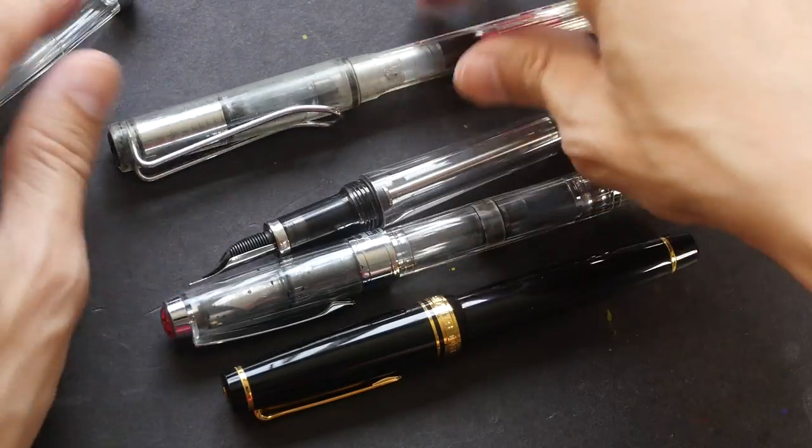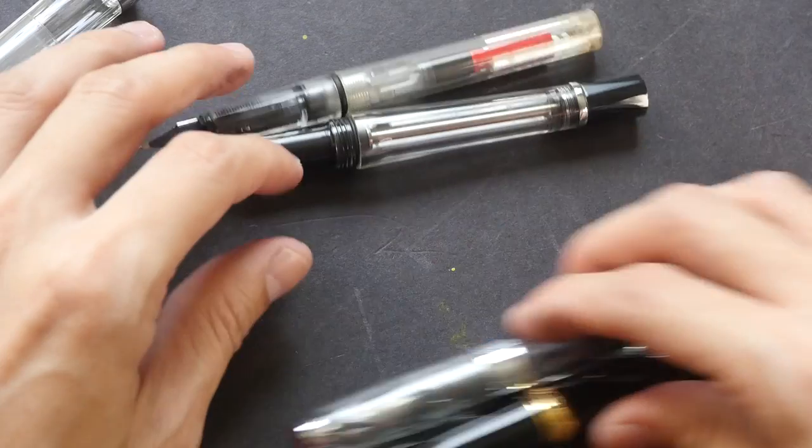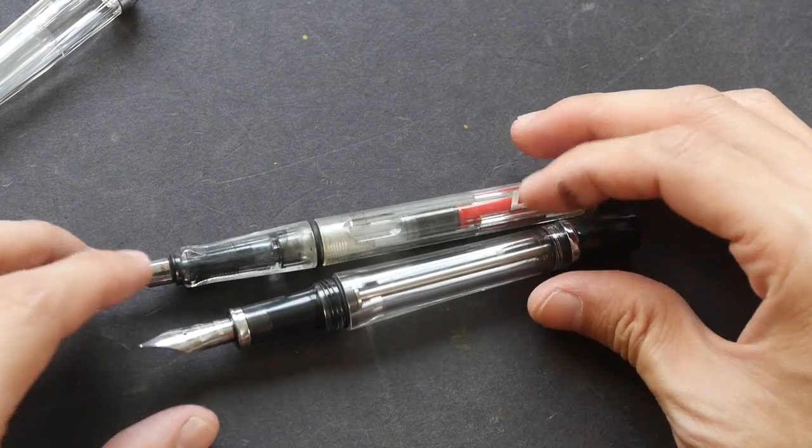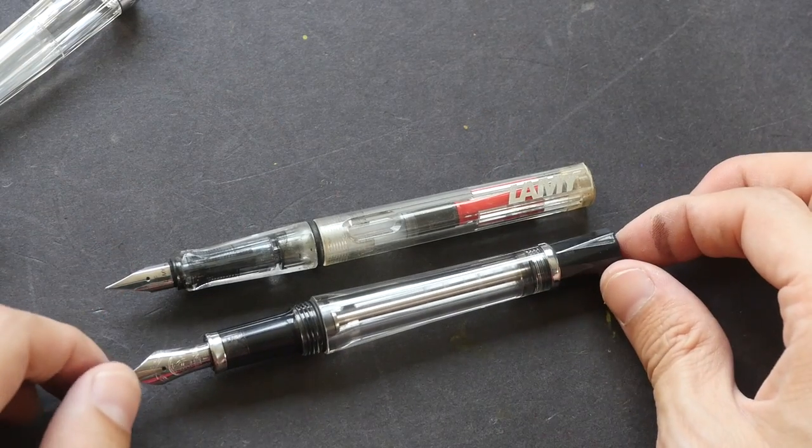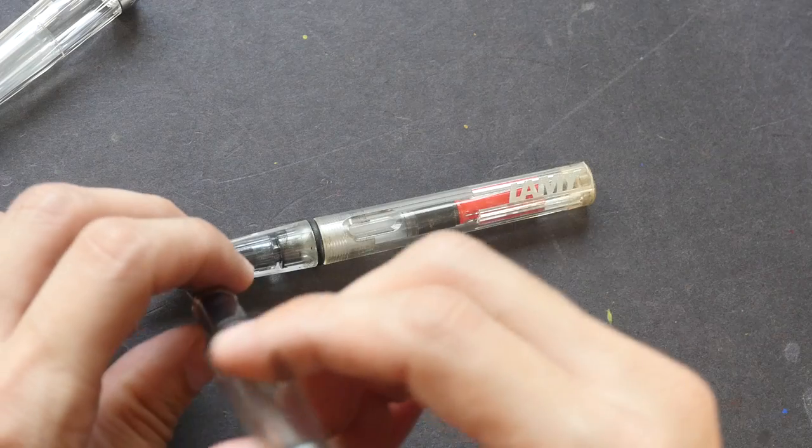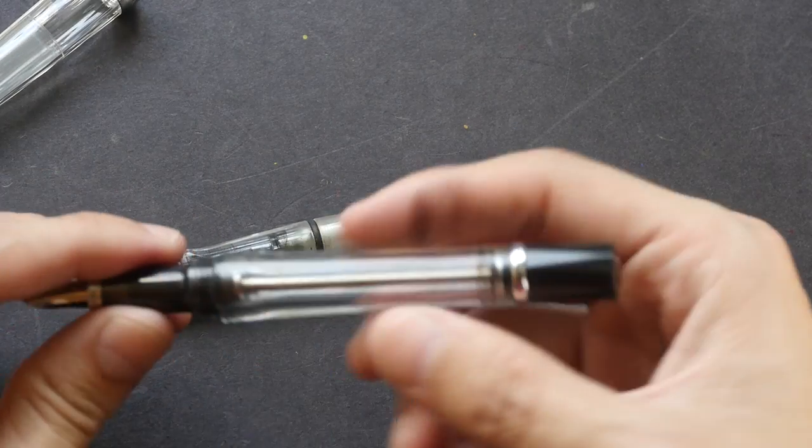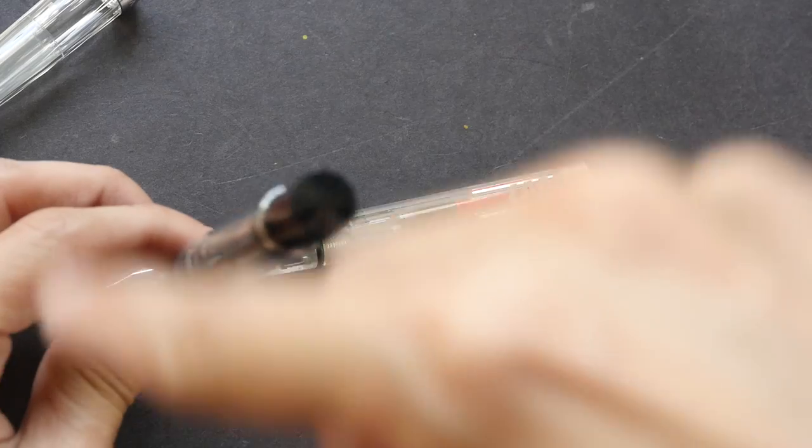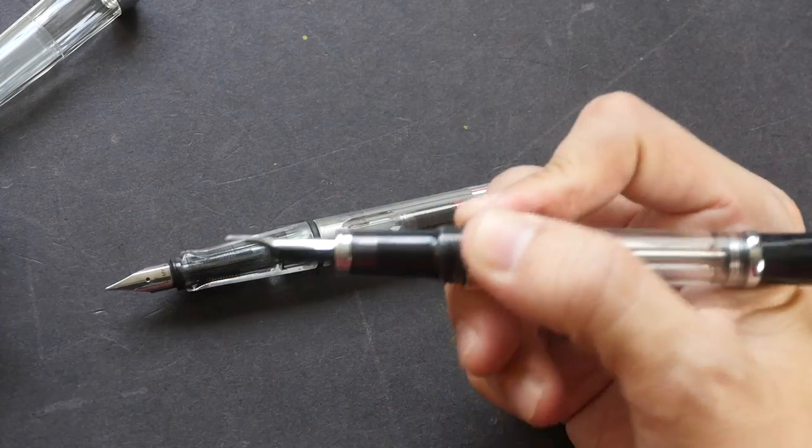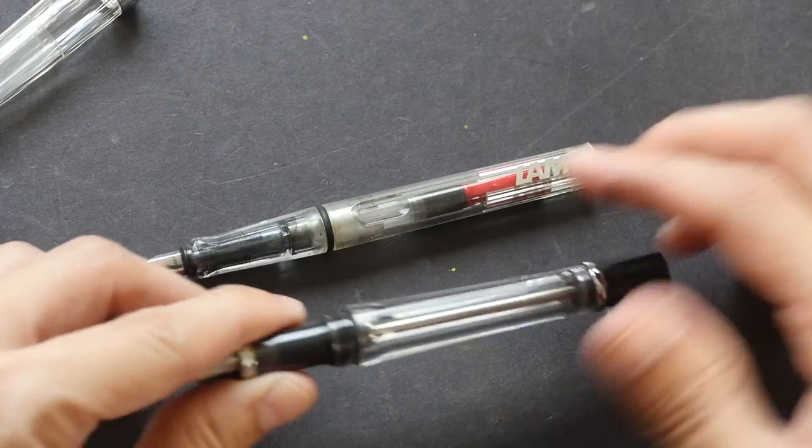Let me open this up and compare it to the Lamy Safari. They are almost the same length, however the Twisbi Vac has a much larger body because the diameter is a bit bigger, so it feels a bit chunkier compared to the Lamy Safari.